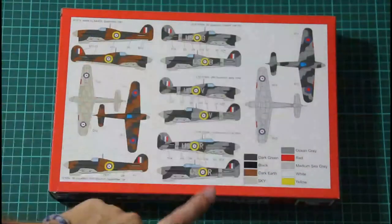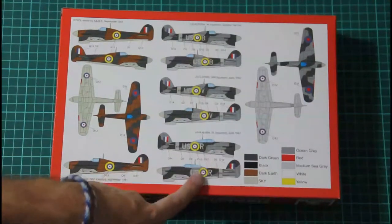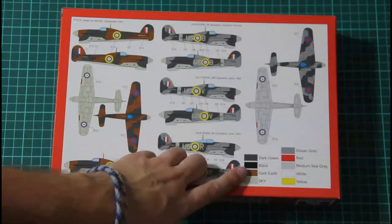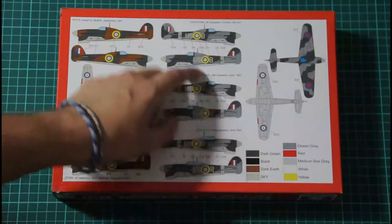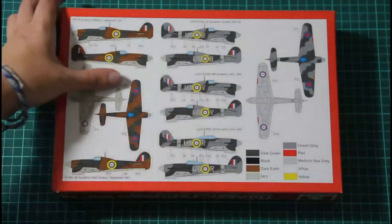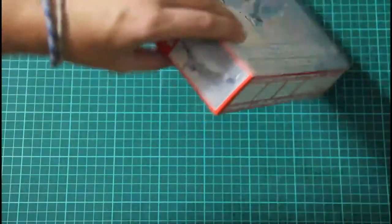And here we have marking options which are available. There are one, two, three, four of them. Pretty interesting options. Colors are given in simple callouts. I mean they are not attached to any paint manufacturers, so it would be easy to pick up paints you like.